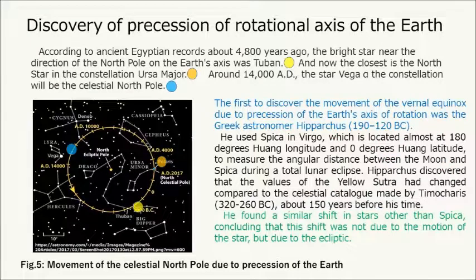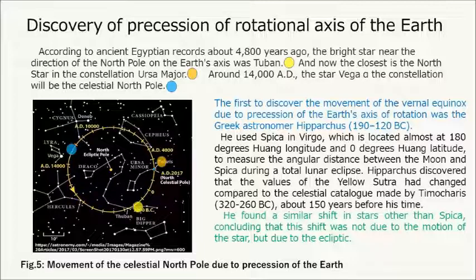The discovery of precession of the rotational axis of the Earth: According to ancient Egyptian records about 4,800 years ago, the bright star near the direction of the north pole was Thuban. Today, the closest is the north star in the constellation Ursa Major, and around 14,000 AD, the star Vega in the constellation Lyra will become the celestial north pole. The first to discover the movement of the vernal equinox due to precession was the Greek astronomer Hipparchus. He used Spica in Virgo — located almost at 180 degrees ecliptic longitude and 0 degrees ecliptic latitude — to measure the angular distance between the moon and Spica during a total lunar eclipse. Hipparchus discovered that the values of the ecliptic longitude had changed compared to the celestial catalogue made by Timocharis about 150 years before his time, and found a similar shift in other stars, concluding that this shift was not due to the motion of the stars but due to the ecliptic.